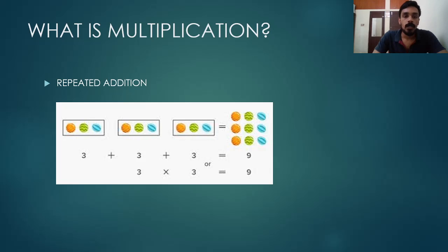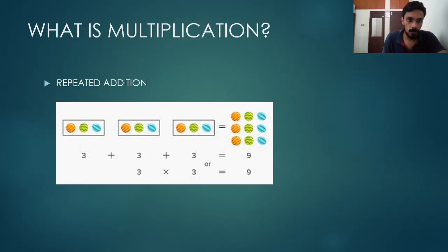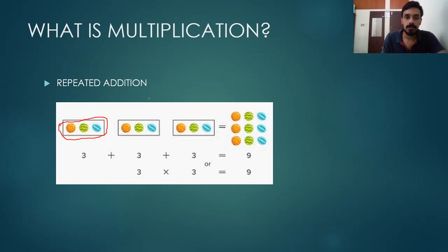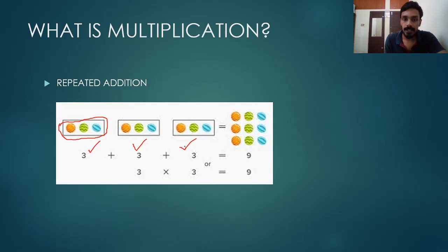So on the screen you can see one orange color ball, one green color ball, and a blue color ball — these are three balls that you can see on the screen. We are going to repeatedly add these three balls three times, so we are adding three plus three plus three, and we get the answer as nine.